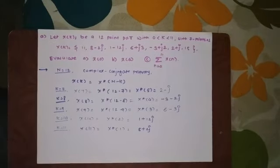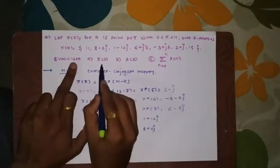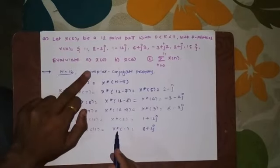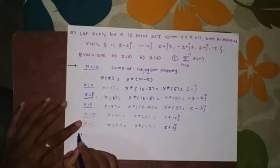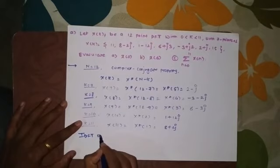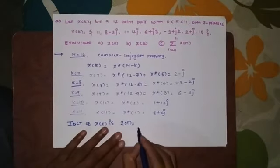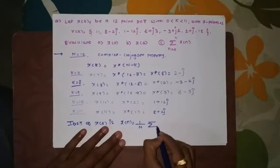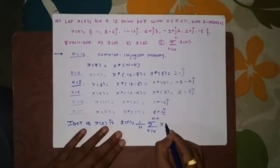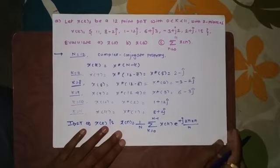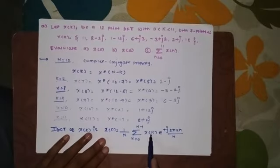We now have all 12 sample points. The question asks us to evaluate small x0 and so on — meaning we are given the DFT and have to find the IDFT. The IDFT formula is: x of N equals 1 over N, summation from K equal 0 to N minus 1, of X of K times e raised to plus J 2 pi K N divided by capital N. Here the input is X of K and the summation is with respect to K from 0 to N minus 1.